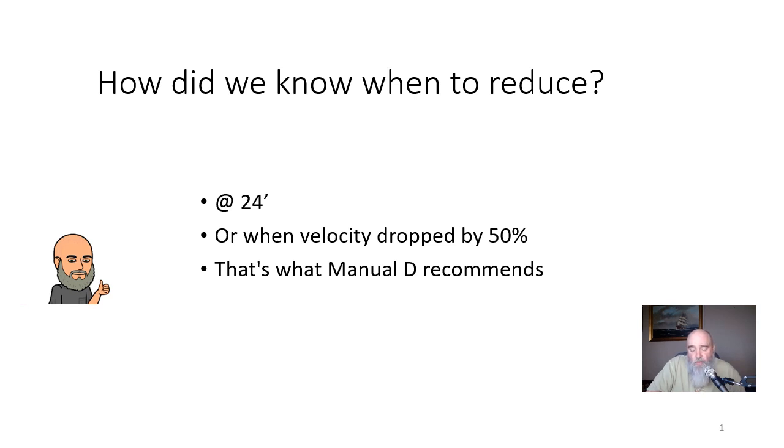You can follow the rules as per Manual D and reduce as many times as you want, but reducing as per Manual D is exactly what's on your screen: at 24 feet or when your velocity has dropped by 50 percent. You can go years back with Manual D and it was much more stern with that guidance. In the last printing it's turned into kind of around 24 feet and kind of around when your velocity drops to 50 percent, but it's not nearly as strict.